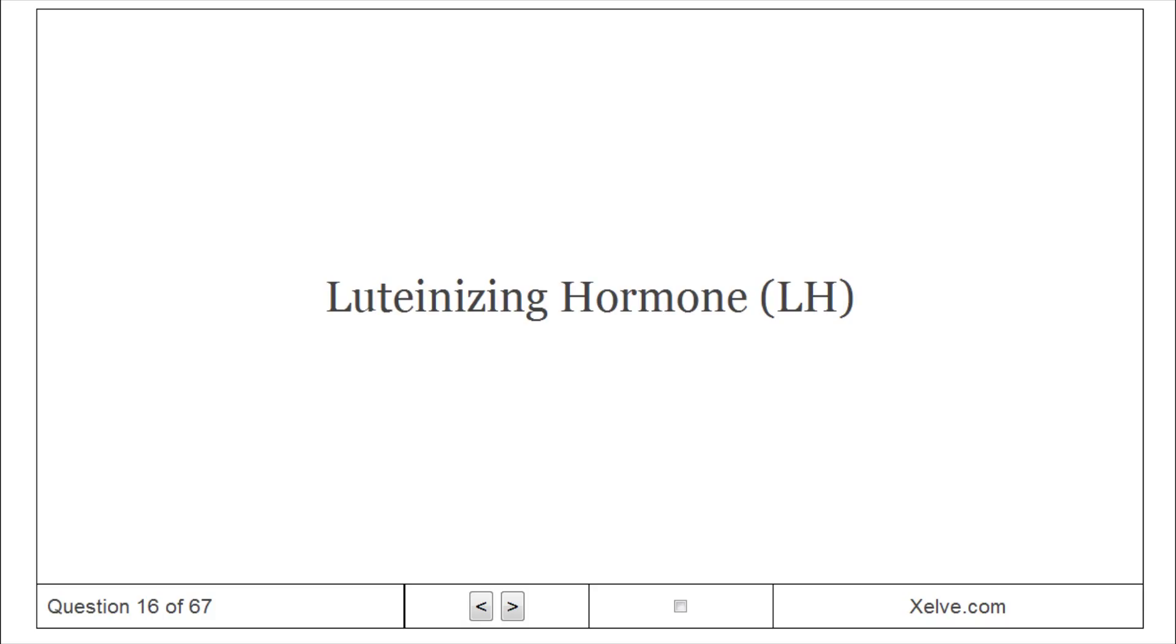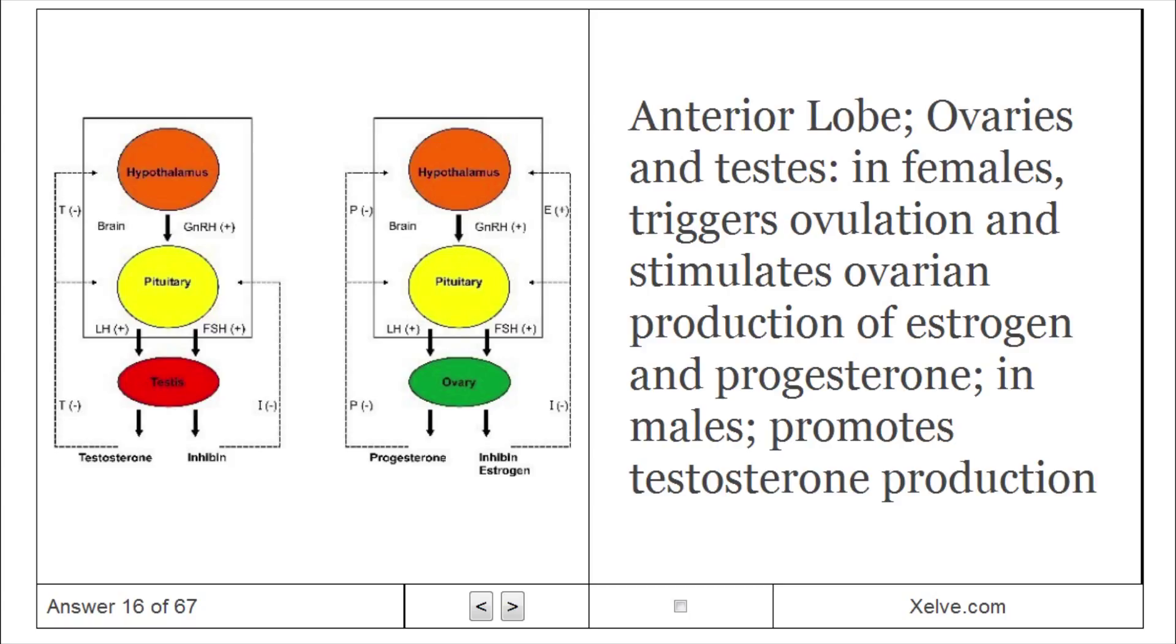Luteinizing hormone, LH. Anterior lobe targets ovaries and testes. In females, triggers ovulation and stimulates ovarian production of estrogen and progesterone. In males, promotes testosterone production.